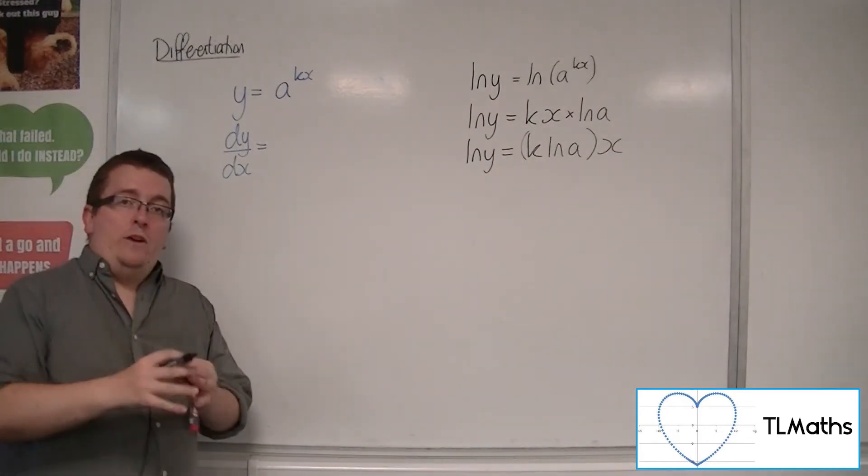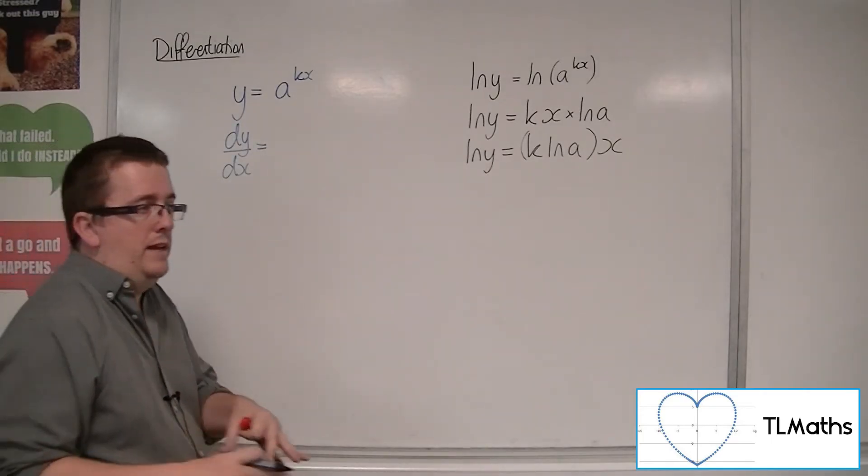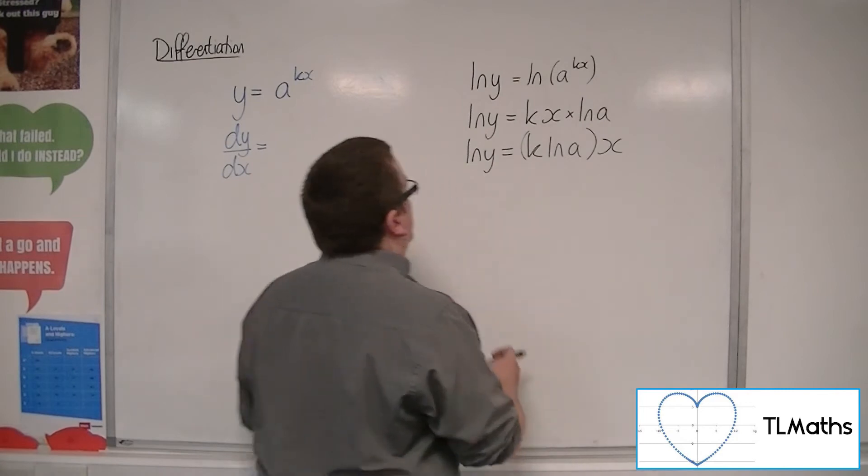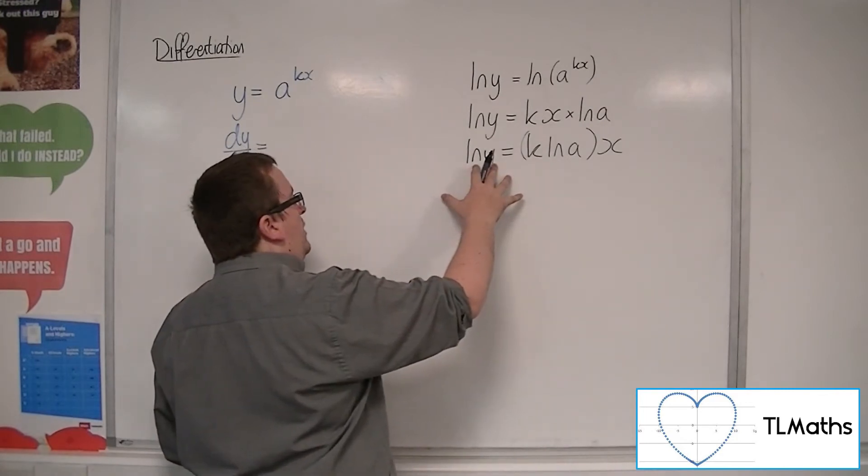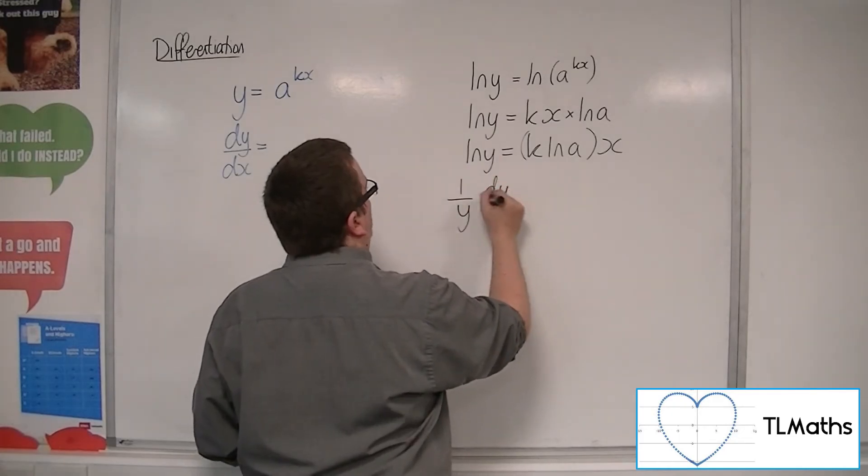So I now use implicit differentiation. Later on in the section. So I implicitly differentiate the left-hand side with respect to x, and I get 1 over y dy by dx.